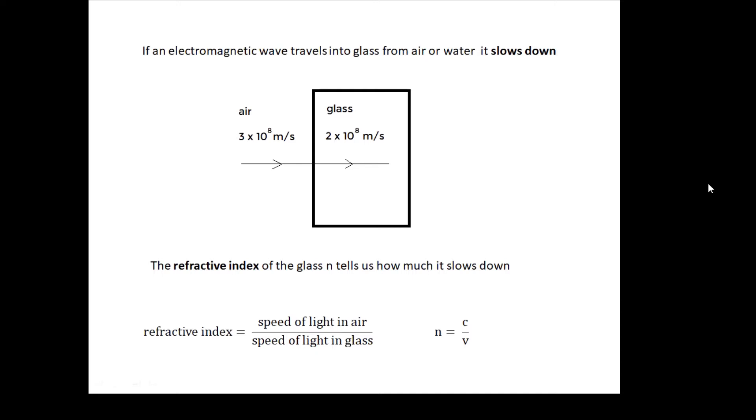Now because nothing can travel faster than the speed of light in air or vacuum—3 × 10^8—n is always bigger than 1. n is going to be 1.33 or 1.4 or 1.5, something like that. n is always bigger than 1, and because it's a ratio it doesn't have any units. So n is refractive index and it's how much the wave slows down.